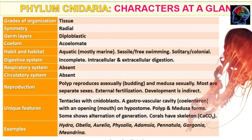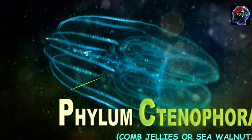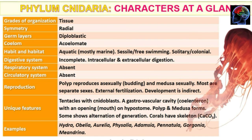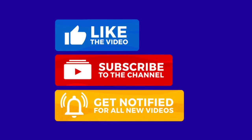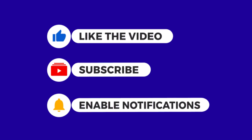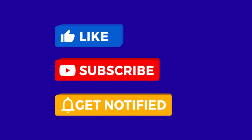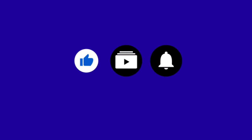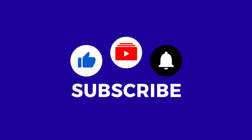This was our Phylum Cnidaria. In the next class we will discuss Phylum Ctenophora, which we call comb jellies and sea walnuts. Here our Phylum Cnidaria is complete. Please subscribe — it is free — so that you can get continuous notifications. Thank you and best of luck.